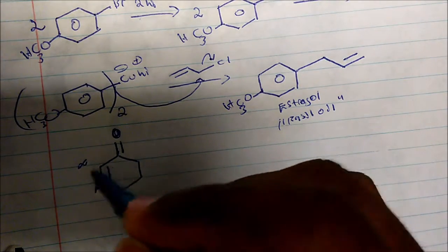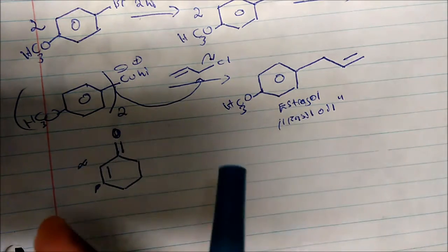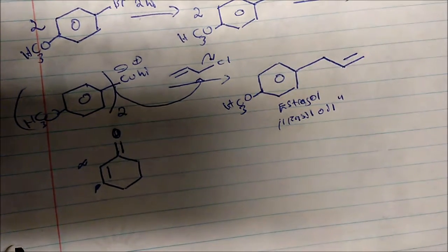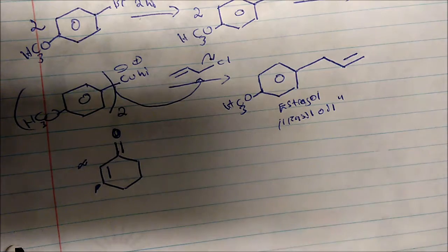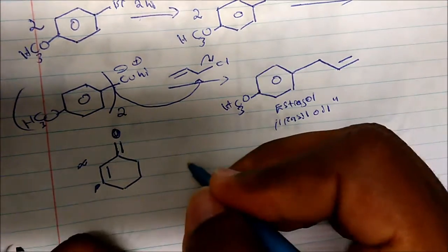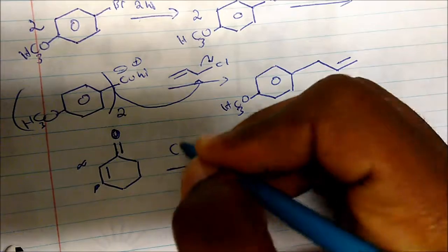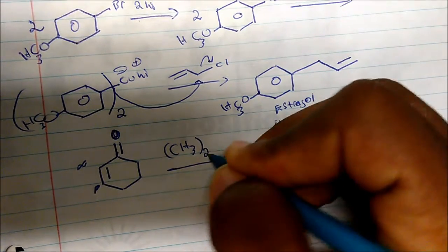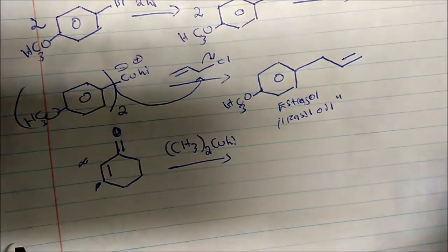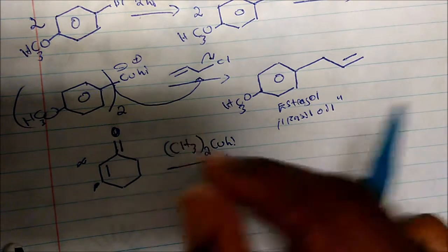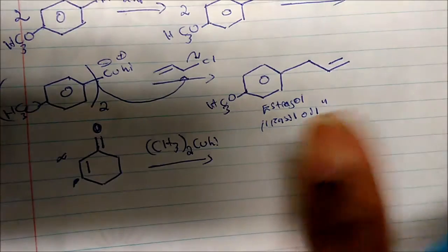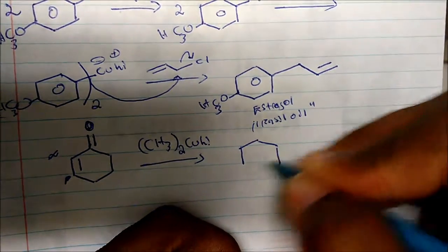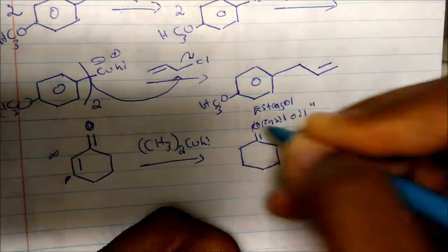The proton adjacent to the carbonyl is our alpha proton, and the one just below is the beta proton. Another thing the Gilman reaction is useful for: if we take CH3 — two moles of that — and copper iodide, creating the Gilman reagent, and react it with an alpha-beta unsaturated ketone, we form a specific product via conjugate addition.